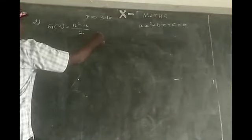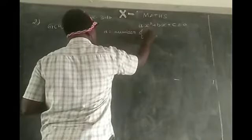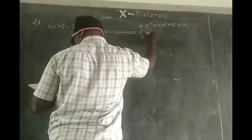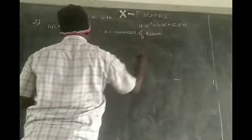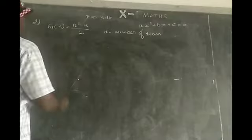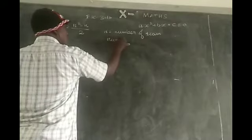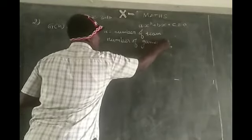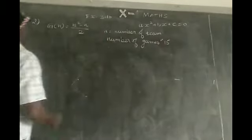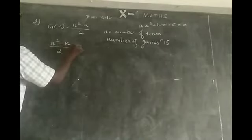n is equal to number of teams. So total games is 15. g of n is equal to 15. Therefore, n square minus n by 2 is equal to 15.